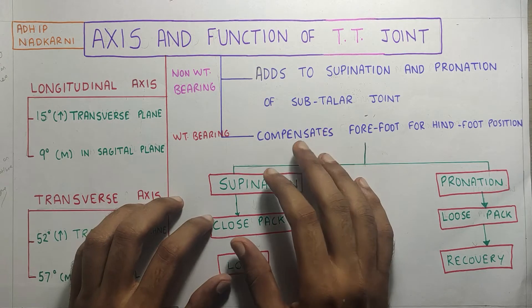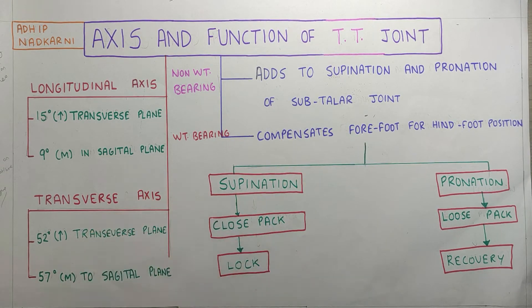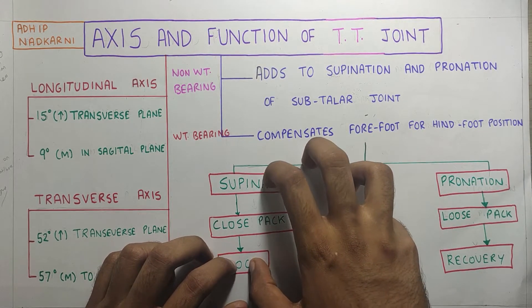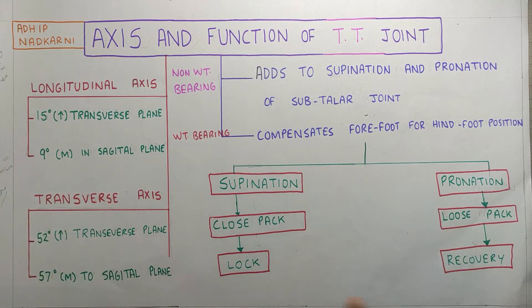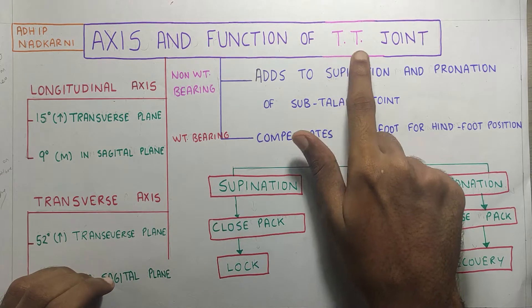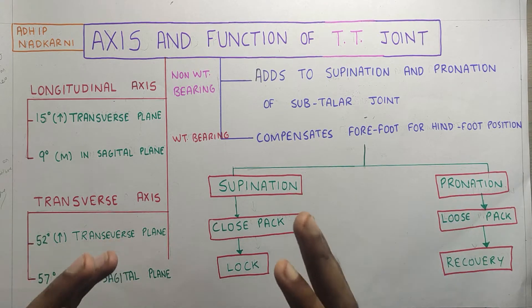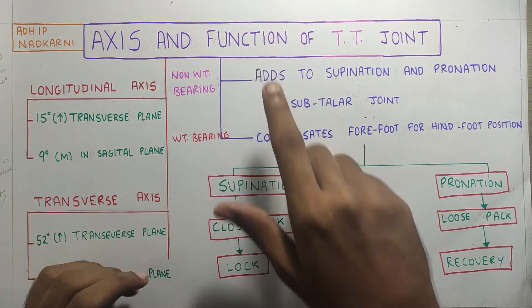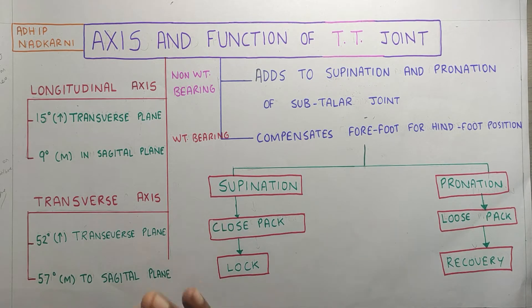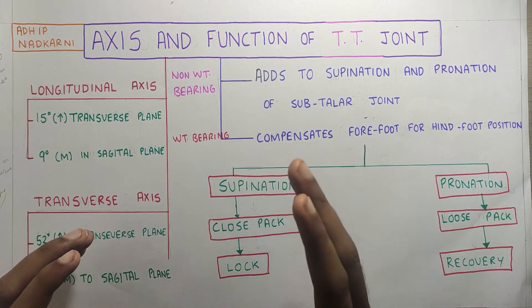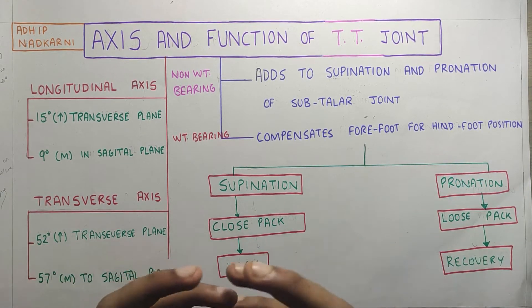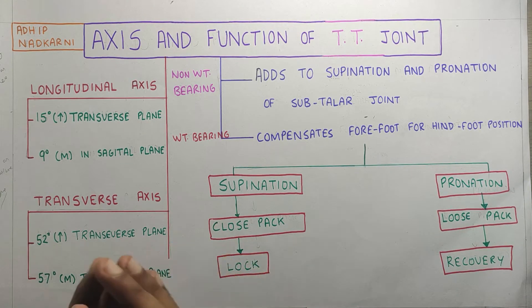Before starting the topic, I hope you guys have checked all those topics I've covered in the ankle joint series. Please check that out and then come to the transverse tarsal joint so that you get a better understanding of the ankle-foot complex. In the last video we saw the structure of the transverse tarsal joint. This video will be about understanding the function and the axis around which movement in the transverse tarsal joint takes place. In the subtalar joint we saw that the axis was oblique and the movement was triplanar — occurring in all three planes — that was supination and pronation.